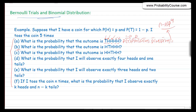For the second part, what is the probability that the outcome is heads, tails, heads, heads, heads? Again multiplying probabilities: p times (1 minus p) times p times p times p, which is again p to the 4th times (1 minus p). And similarly, any specific sequence with exactly 4 heads and 1 tail will also have probability p to the 4th times (1 minus p).